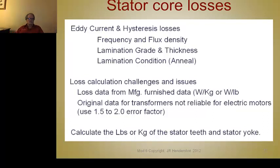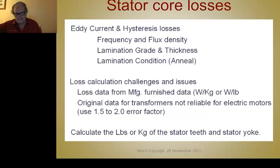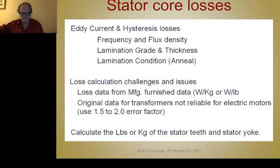The way to calculate core losses is to use formulas, look up steel company data, and calculate the mass of the stator teeth, rotor teeth, stator yoke, and rotor yoke — then apply the appropriate core loss in watts per pound at the operating frequency and flux density for each section, sum them up, and that gives your estimated core loss for efficiency calculations. But there are errors that result from this approach.